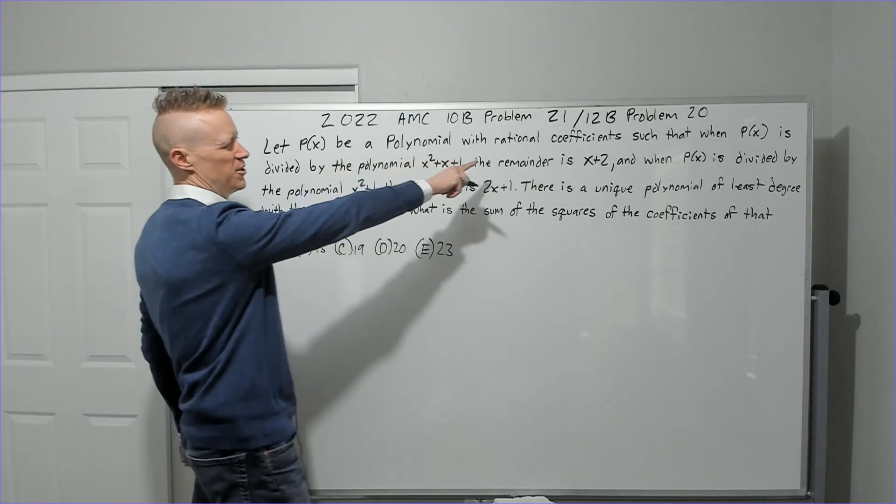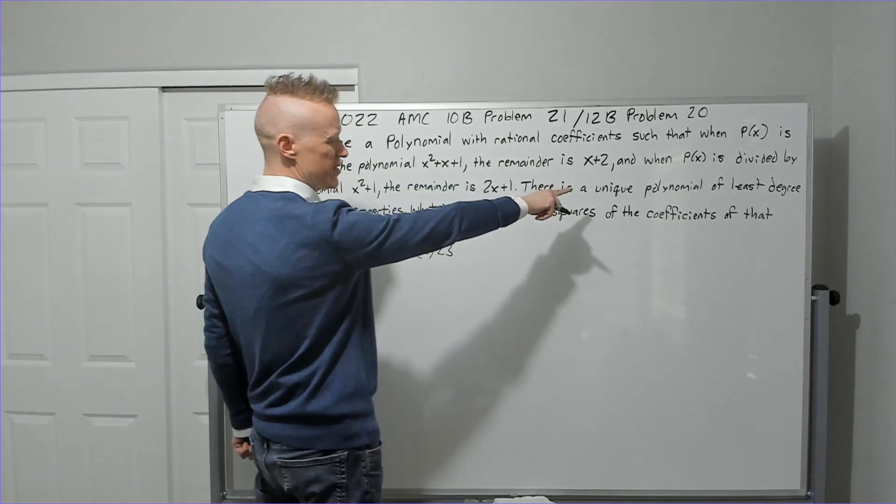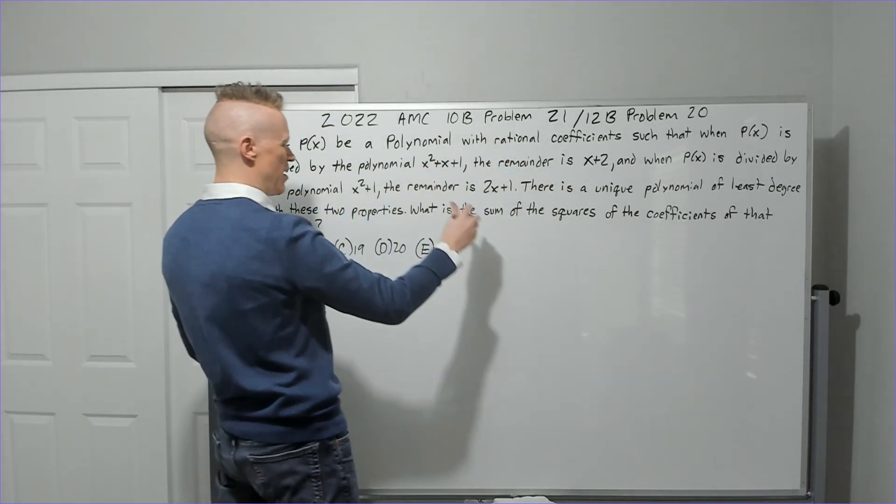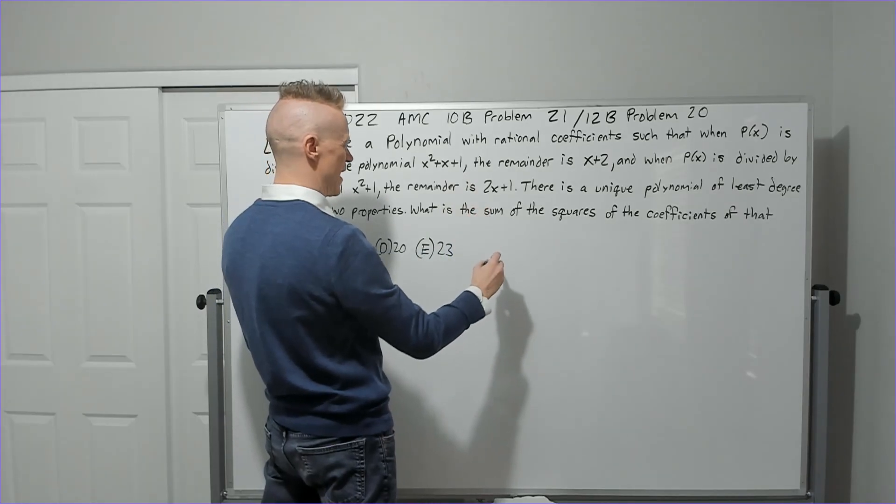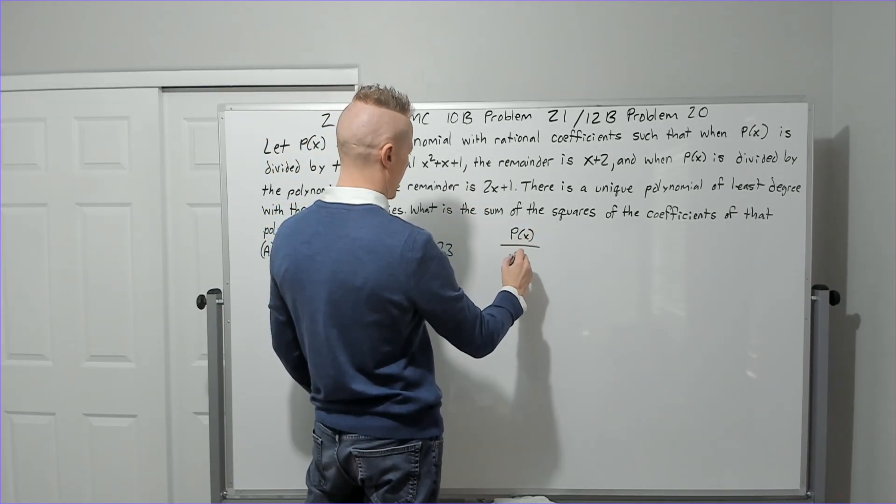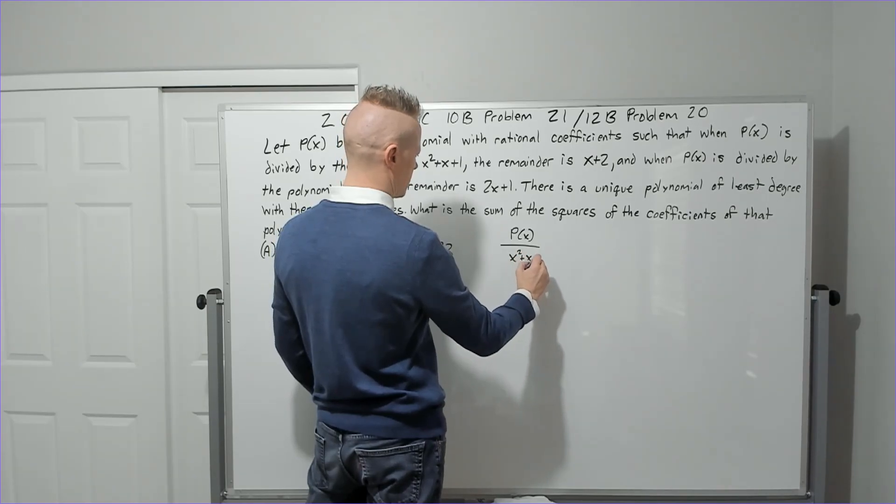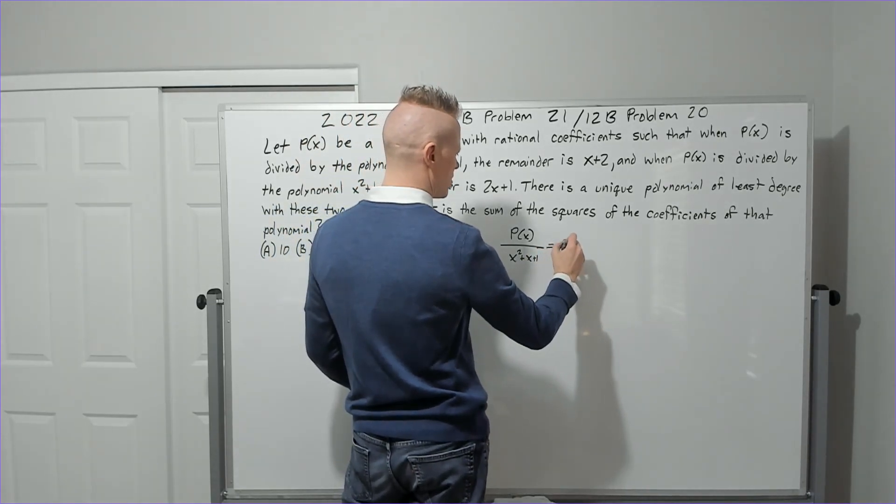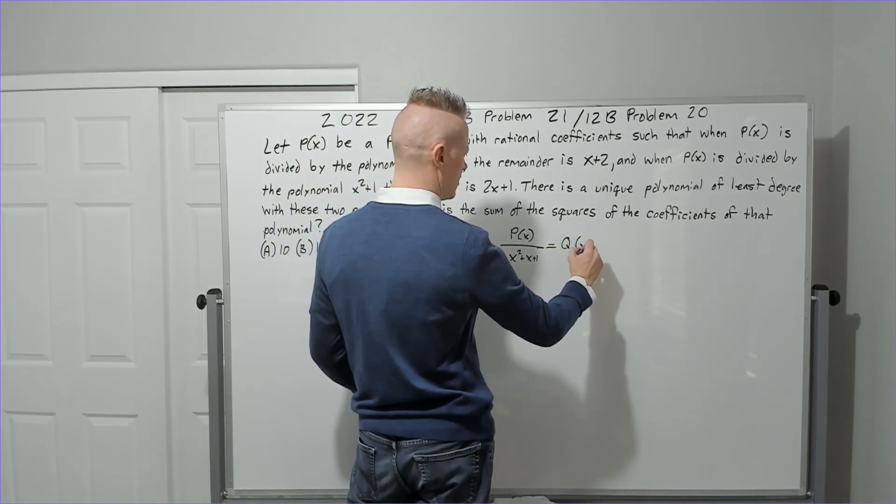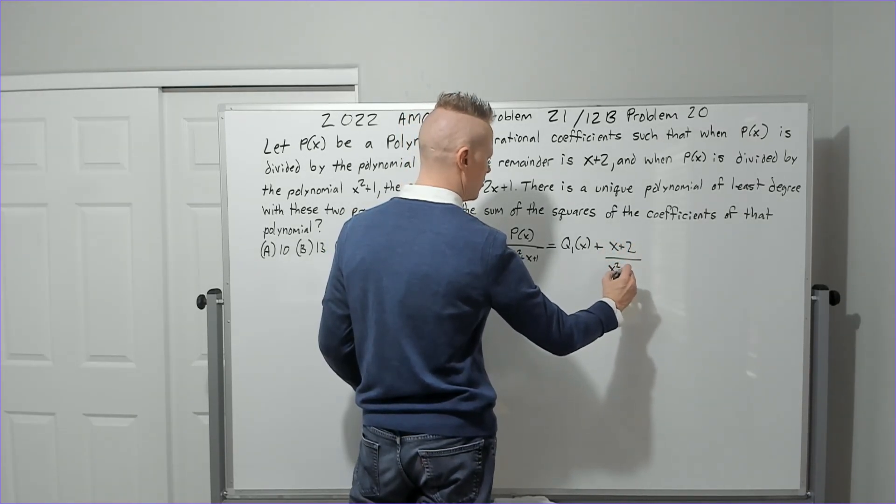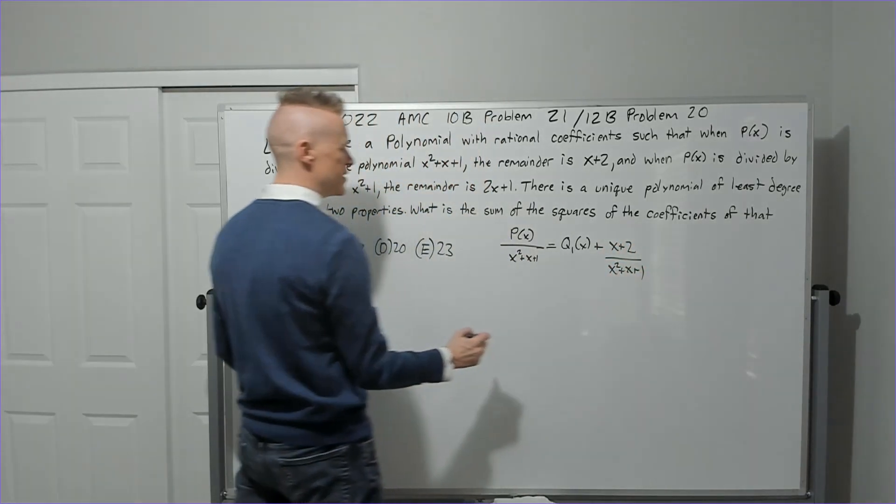Let p(x) be a polynomial with rational coefficients such that when p(x) is divided by the polynomial x squared plus x plus one, so we'll say p(x) over x squared plus x plus one, the remainder is x plus two. So this will equal the quotient q(x) plus the remainder of x plus two over x squared plus x plus one.